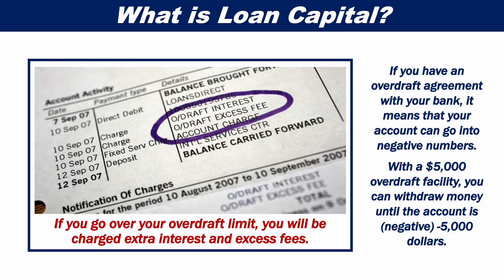If you have an overdraft agreement with your bank, it means that your account can go into negative numbers. With a $5,000 overdraft facility, you can withdraw money until the account is minus $5,000.